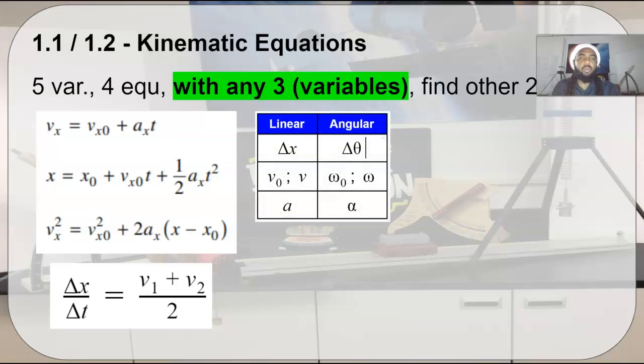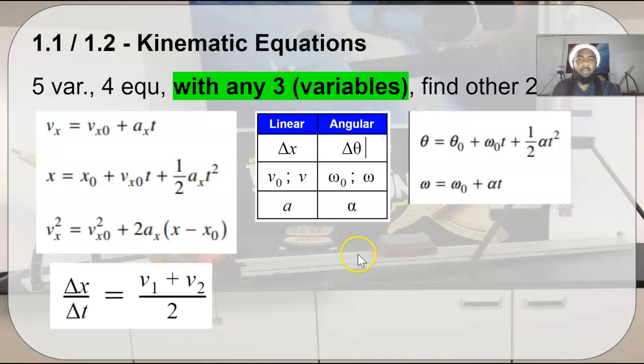Just a quick note, these equations on the left refer to linear kinematics, and they have angular equivalents, which we'll come to in Unit 7. These angular equivalents for delta x would be theta, v would be omega, a would be alpha. On the equation sheet, there are two equations for angular kinematics. You can get the other two by making the substitutions as necessary.